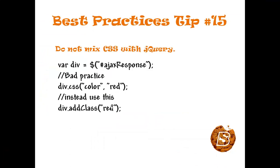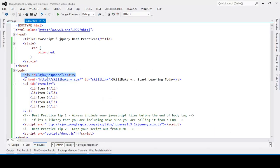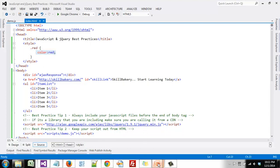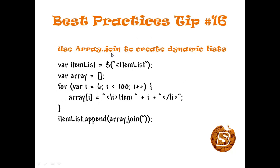Tip number fifteen: we should never mix CSS with jQuery. jQuery allows us to change CSS style attributes of a given element — for example, changing the color to red on an element with ID 'ajaxResponse' using a CSS call. But instead, we should add a class. Define a class 'red' in CSS that changes the font color to red, then use jQuery's addClass to apply it, achieving the same result without mixing CSS with jQuery.